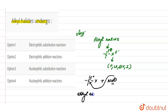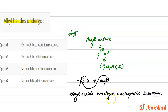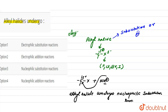The alkyl halide undergoes nucleophilic substitution reaction. As we know, alkyl halide can undergo two major types of reactions, which we call substitution or elimination.